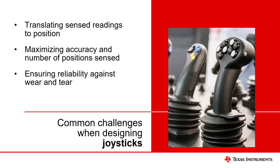Joysticks translate position information into electrical signals that are sensed by the electronics in the system. The electronics takes the electrical readings from the joystick and uses it to determine the joystick position. For high precision systems, the accuracy of translation of the sensor reading to the position information is important to detect as many unique joystick positions as possible.